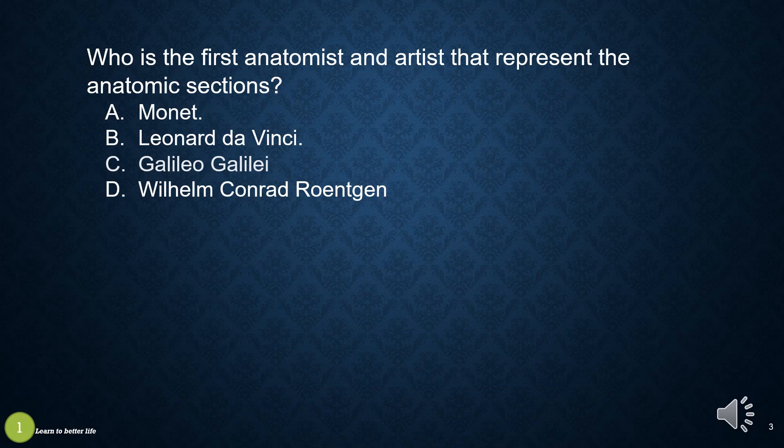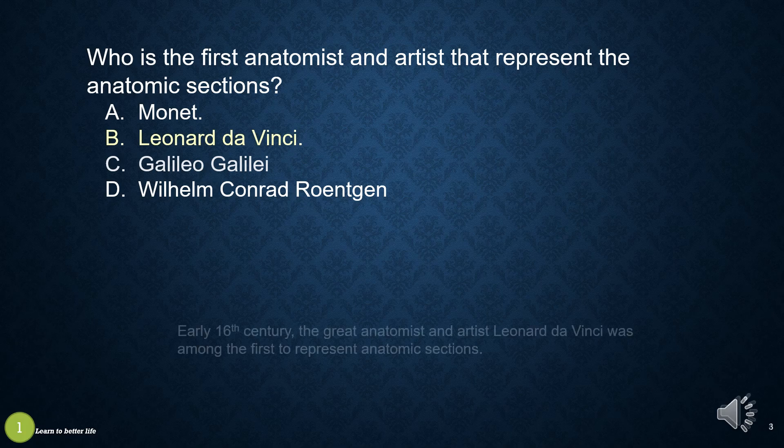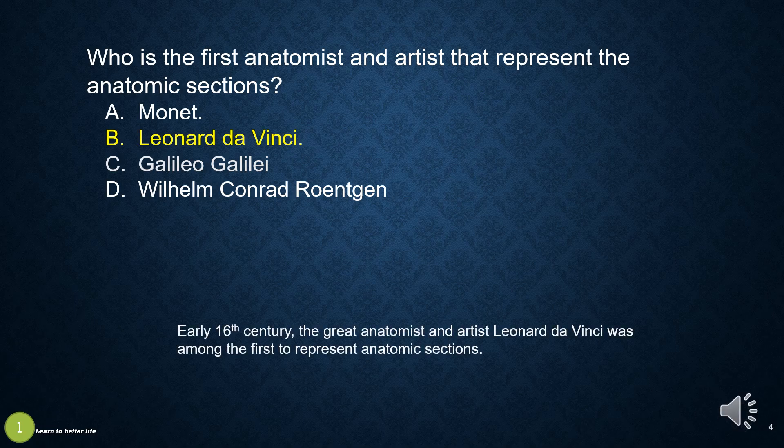Who is the first anatomist and artist to represent the anatomic sections? a. Monet, b. Leonardo da Vinci, c. Galileo Galilei, or d. Wilhelm Conrad Roentgen. The answer is b, Leonardo da Vinci. In the early 16th century, the great anatomist and artist Leonardo da Vinci was among the first to represent anatomic sections.